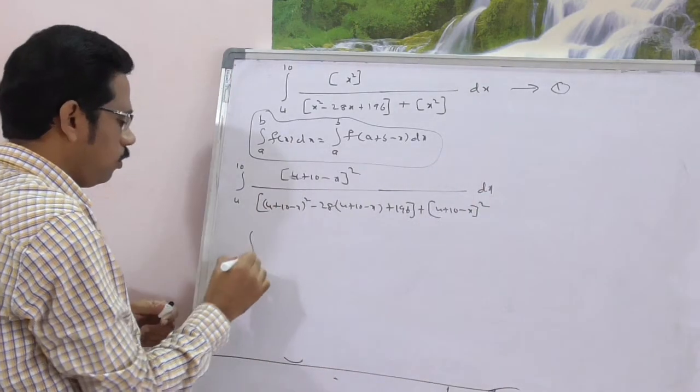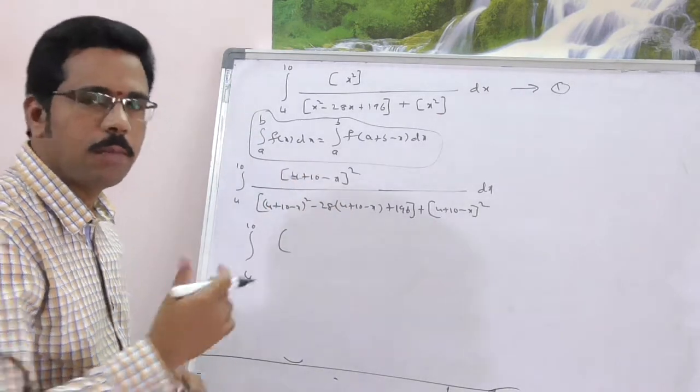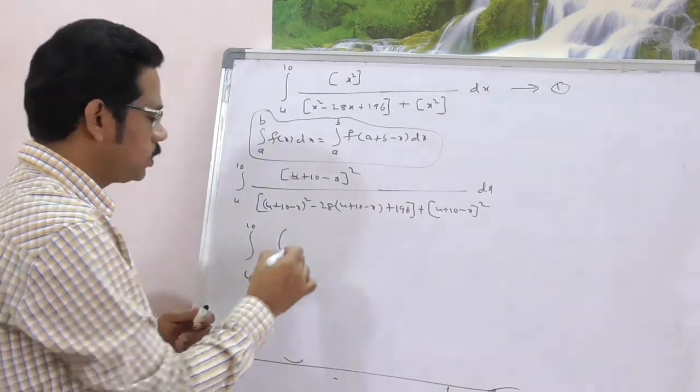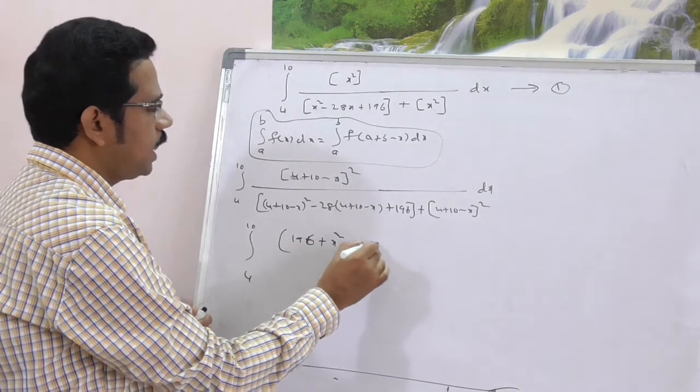4 to 10, expand this. This is nothing but 14 minus x whole square. a minus b whole square, 196 plus x square minus 28x. This is the numerator.